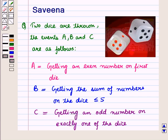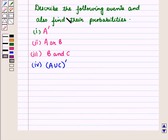Hello and welcome to the session. In this session we will discuss a question which says that two dice are thrown. The events A, B and C are as follows: Event A is getting an even number on the first die. Event B is getting the sum of numbers on the dice less than or equal to 5. And event C is getting an odd number on exactly one of the dice. We have to describe the following events and also find their probabilities.